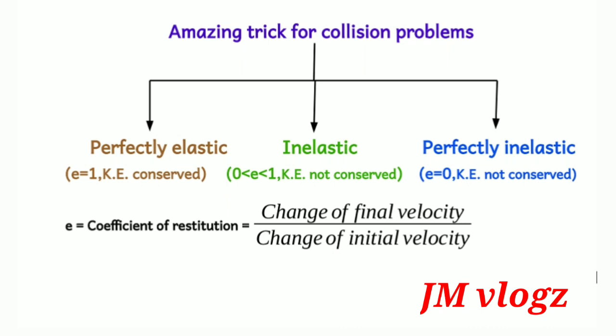For solving this type of problem, we normally take the conservation equations and from that we reach the expression for final velocity. It's a lengthy procedure and very difficult to remember the equations for final velocity. It's also very difficult to fix the positive and negative signs. In some problems it takes four or five minutes at least. Here I am introducing a shortcut which works in 20 seconds.